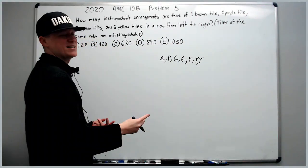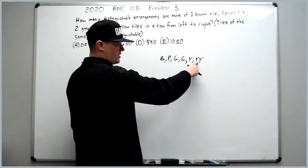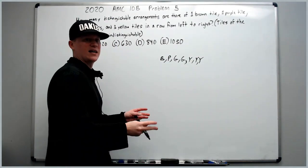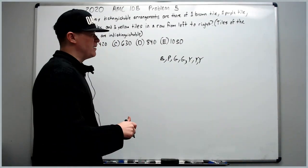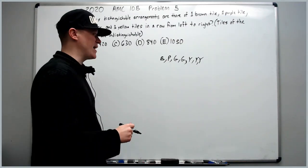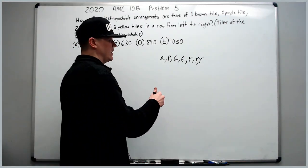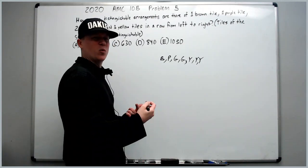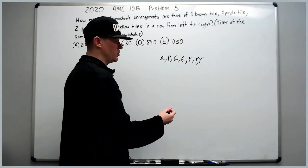Tiles of the same color are indistinguishable. So I don't need a little 1, 2, and 3 here. All the yellows look alike, so they're interchangeable. And if you've done the intro to counting and probability from AOPS, this problem is pretty trivial. Basically it's like how many words can you make with these letters that are distinguishable?